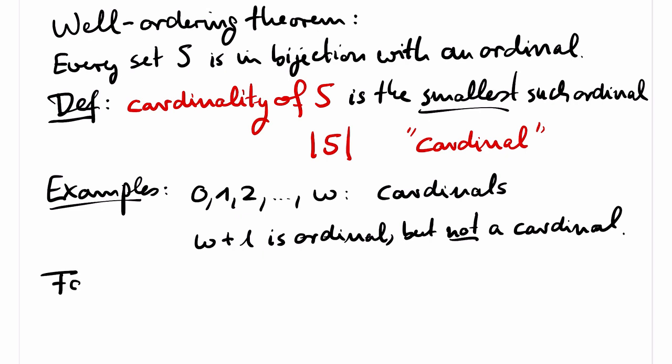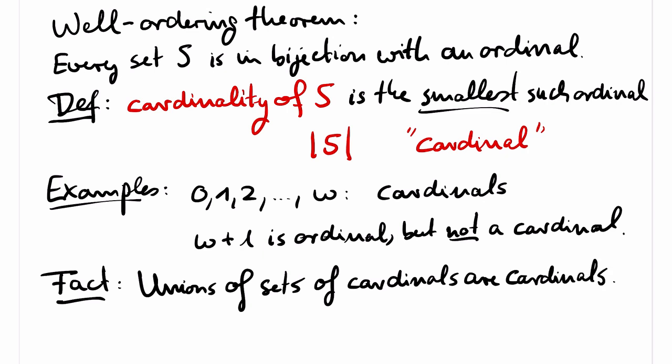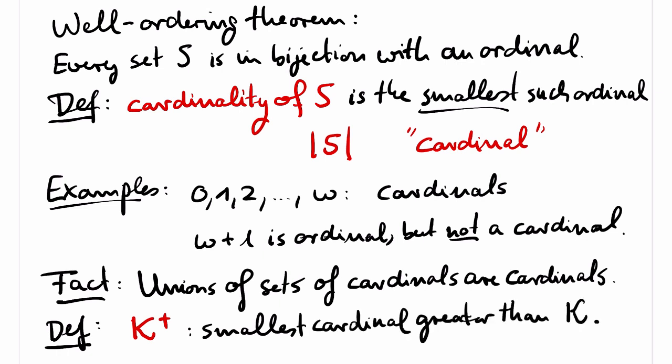A basic fact is that every union of a set of cardinals is again a cardinal. So you can view this as an exercise or you can find it in the course notes. We write kappa plus for the smallest cardinal which is greater than kappa, called the cardinal successor of kappa. To avoid confusion with the ordinal successor, one can write plus 1 instead of superscript plus for the ordinal successor.